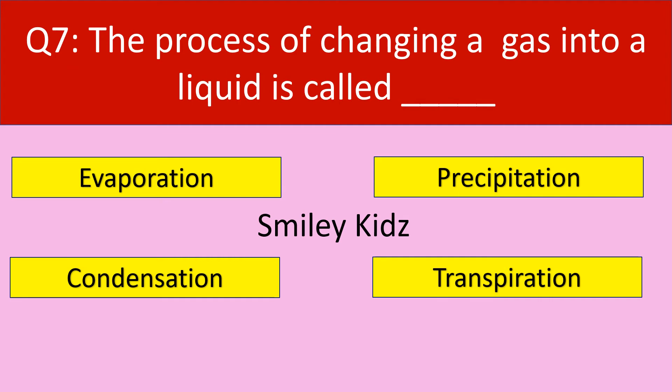Question number 7. The process of changing a gas into a liquid is called — your options are: evaporation, precipitation, condensation, transpiration. Your time starts now.